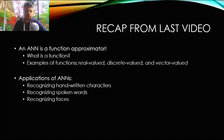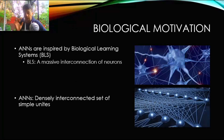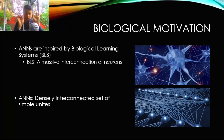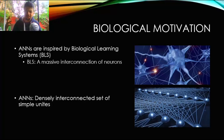Today we're going to talk about the biological motivation behind artificial neural networks. Artificial neural networks are sort of inspired by biological learning systems, or BLS. If you think about your body, it consists of millions and millions of little electrical pulsing units called neurons. They are interconnected to each other through this massive and dense network all around your body, every inch of it.